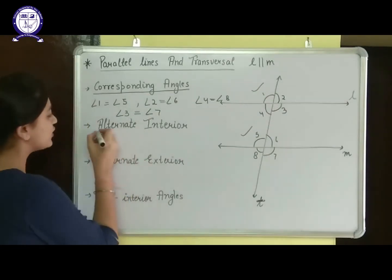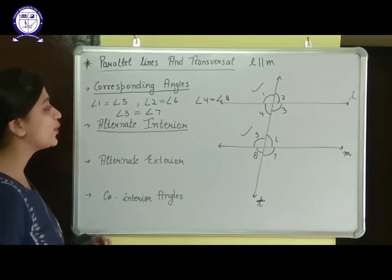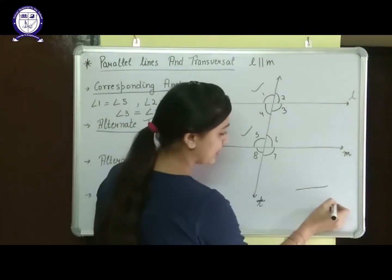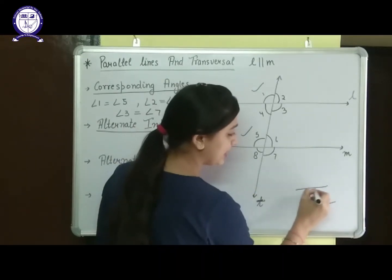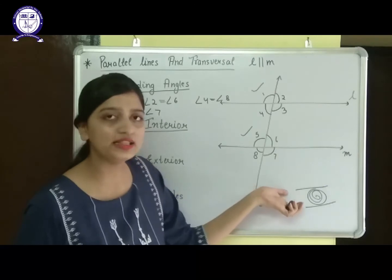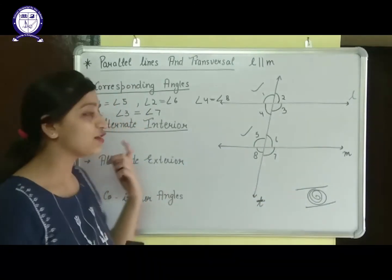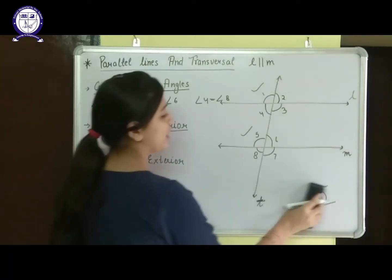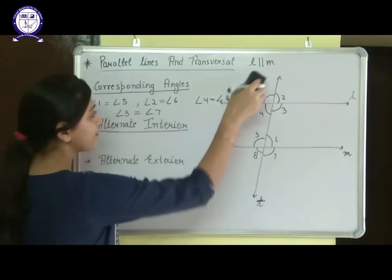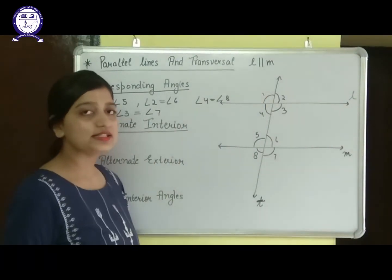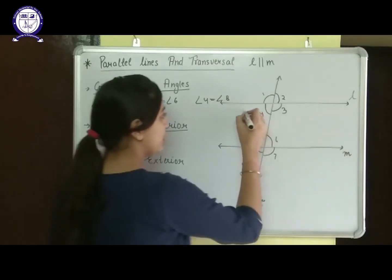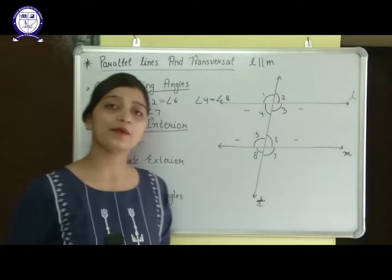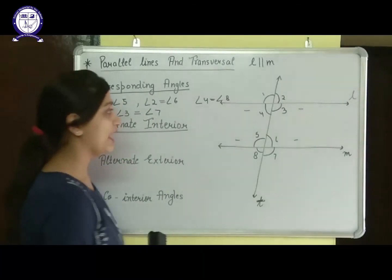The second rule is alternate interior angles. First, what is interior? Interior means the angles are inside the region between the two parallel lines — that is, in between these lines. Alternate means on the opposite sides of the transversal. There are four angles in the interior of the parallel lines.